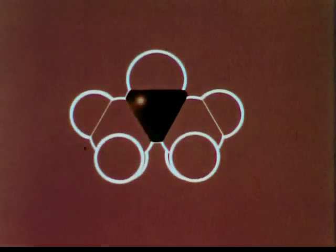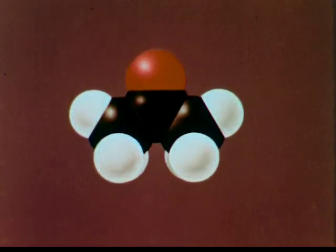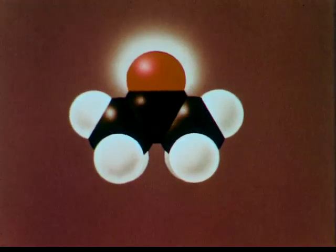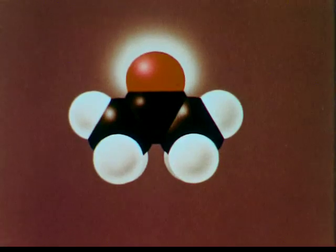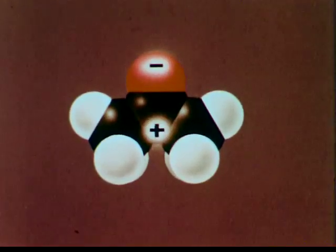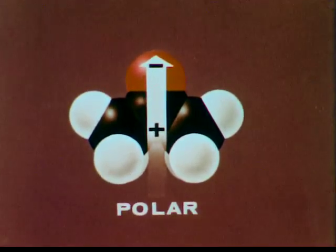Acetone consists of a central carbon atom, with an oxygen atom on one side and two CH3 groups on the other. Because the oxygen atom has greater attraction for electrons than does carbon, consistent with the ionization energies, one end of the molecule is negative, the other end is positive. Therefore, acetone has a dipole. Any molecule that has a dipole is called a polar molecule.